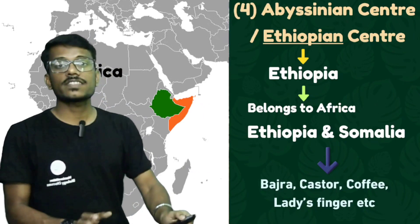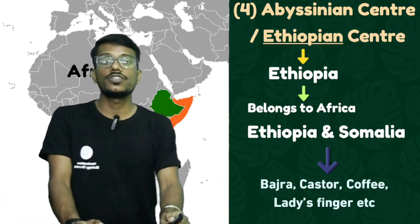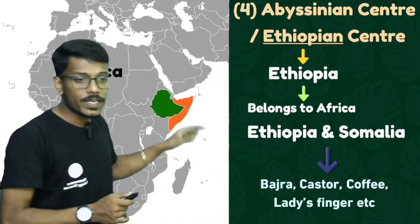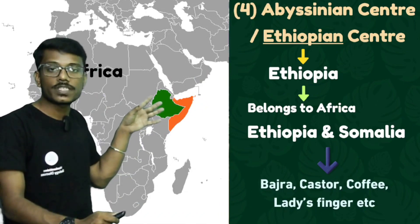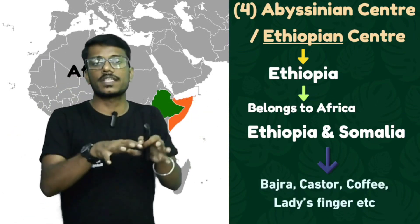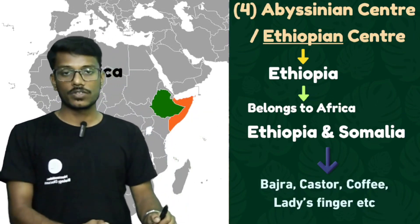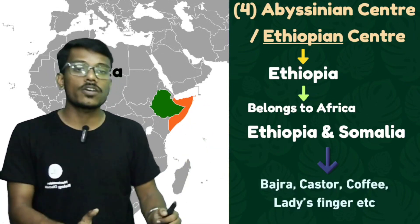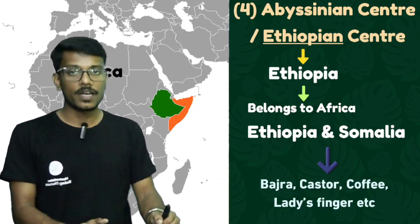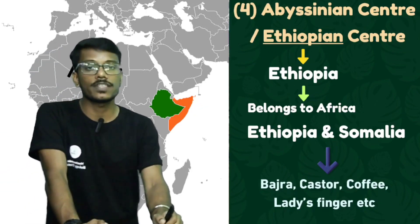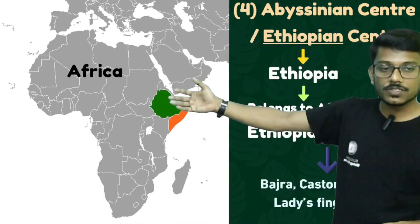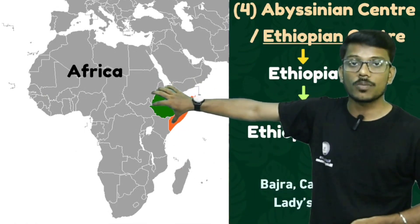The fourth center is the Abyssinian center of origin, also called the Ethiopian center of origin. Ethiopia belongs to Africa — specifically the region of Ethiopia and Somalia. This Abyssinian or Ethiopian center of origin gave rise to crops like bajra, castor, coffee, and ladies fingers (okra).